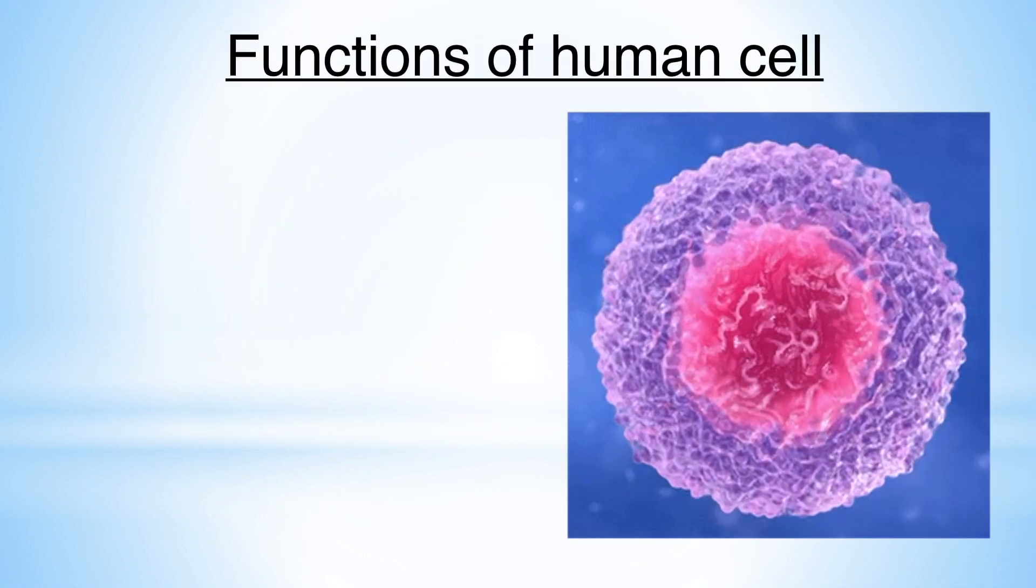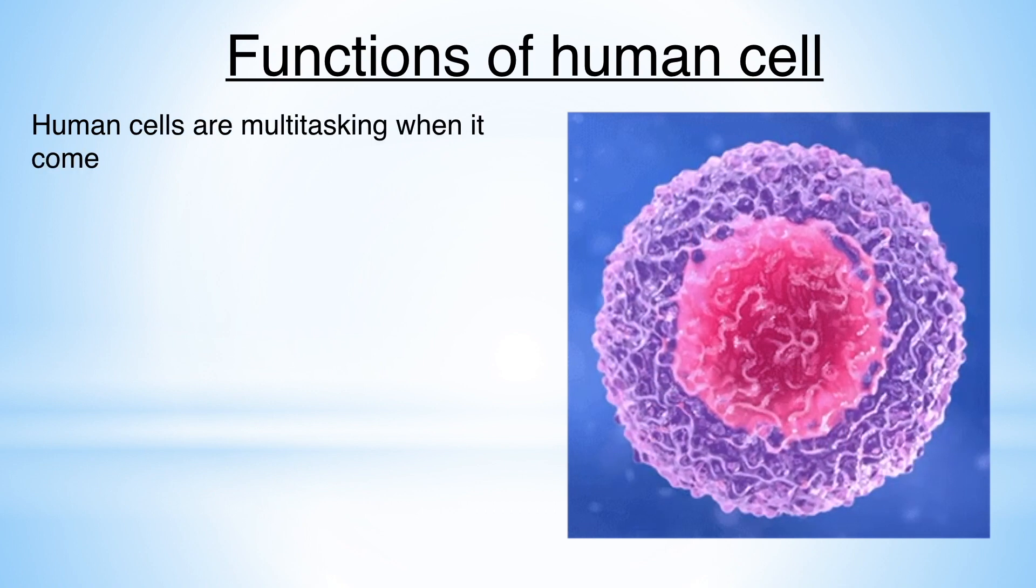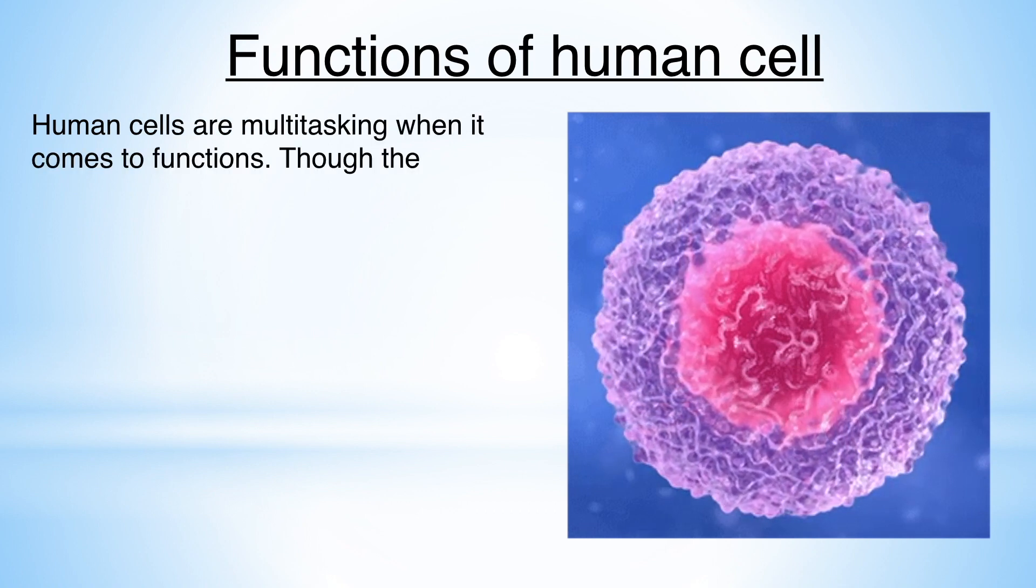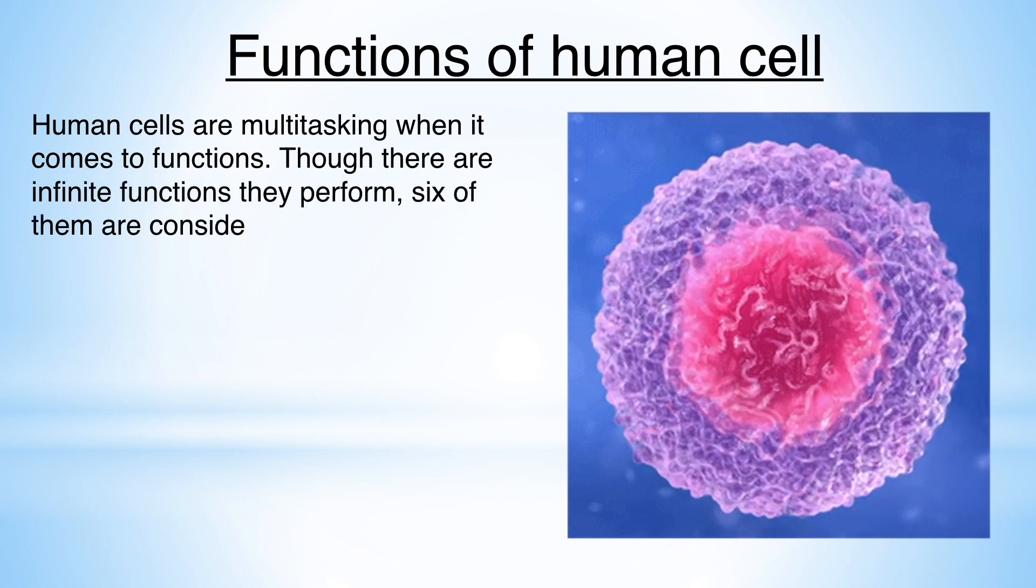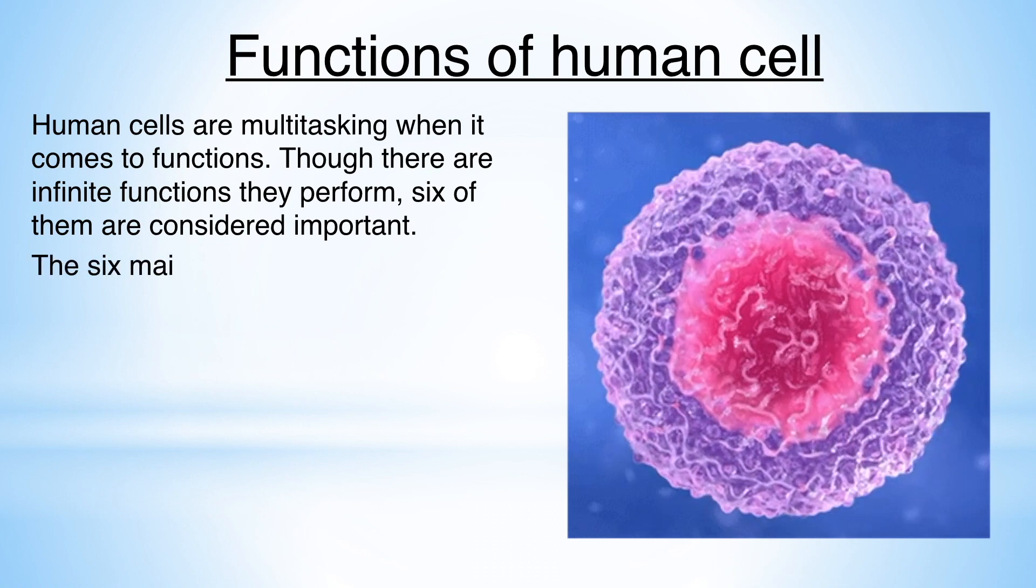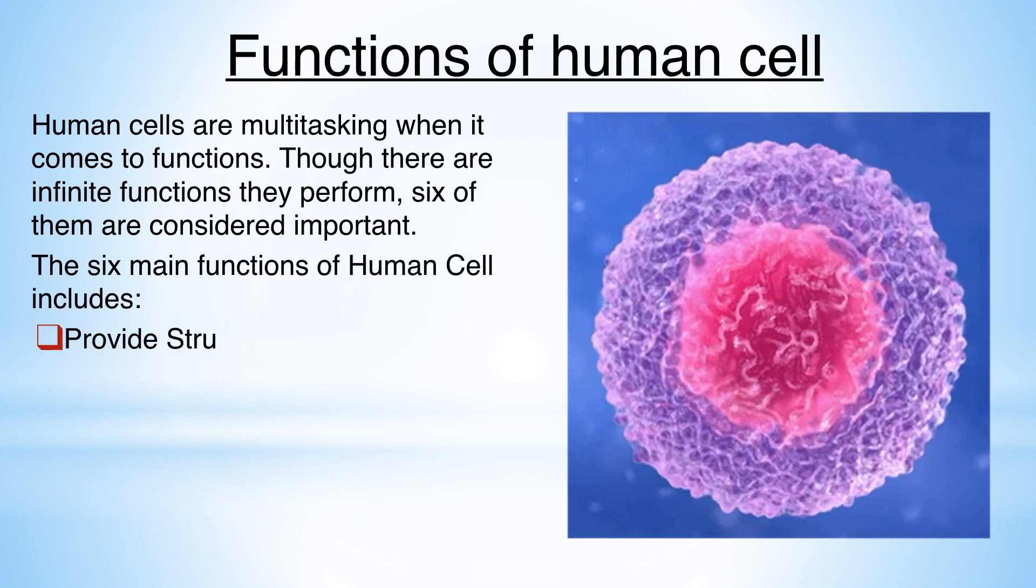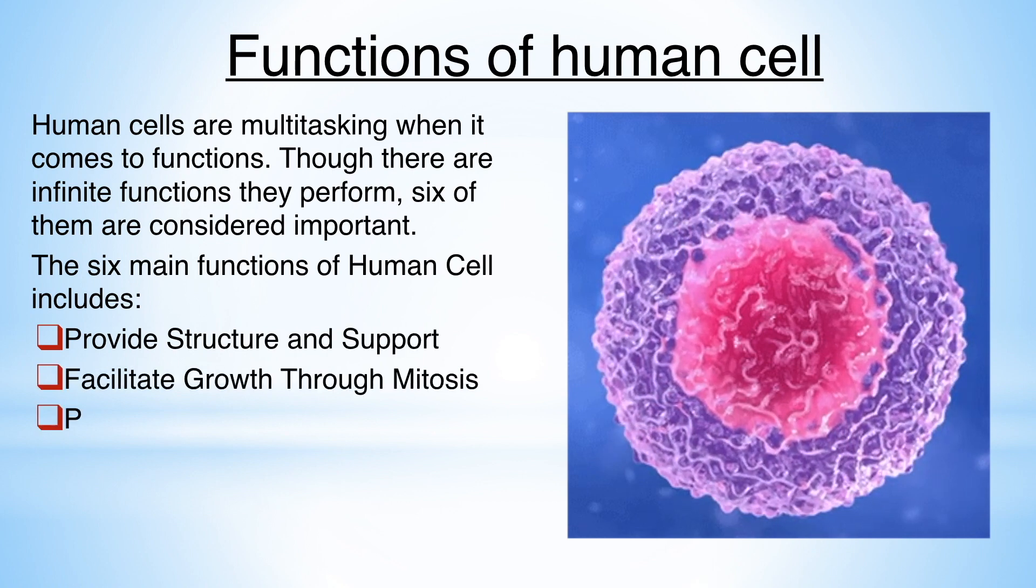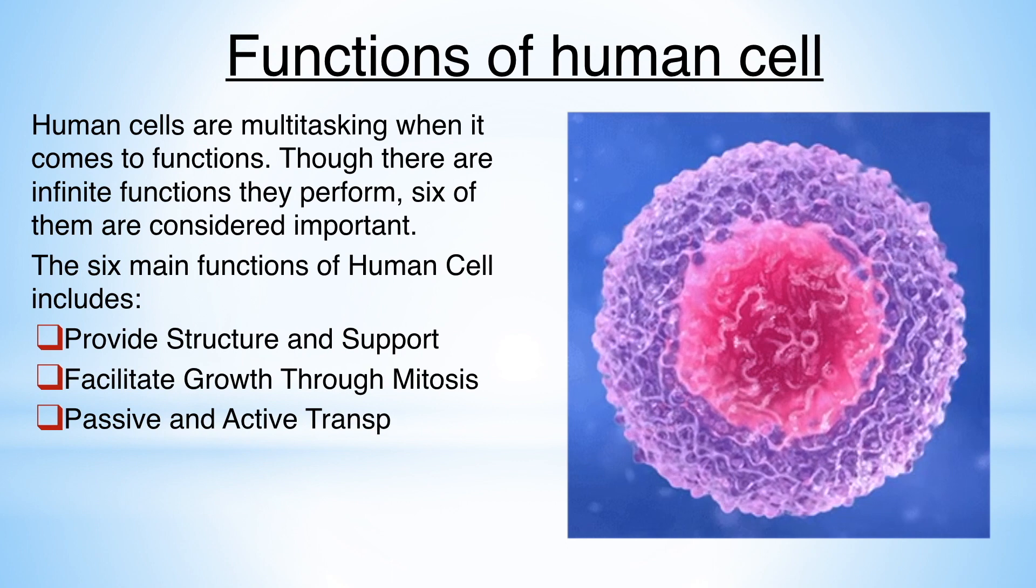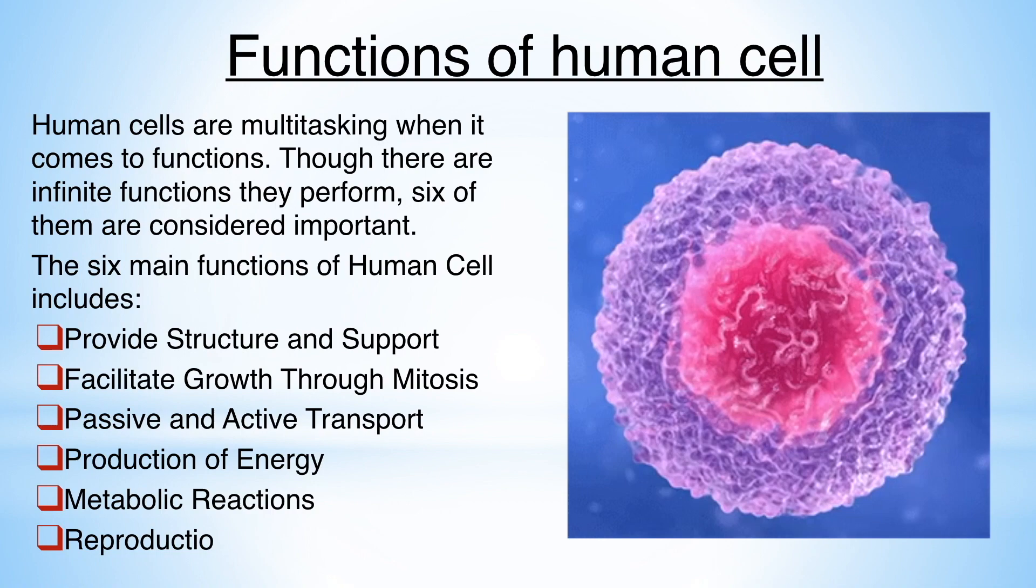Functions of human cell. Human cells are multitasking when it comes to functions. Though there are infinite functions they perform, six of them are considered important. The six main functions of human cell include: provide structure and support, facilitate growth through mitosis, passive and active transport, production of energy, metabolic reactions, and reproduction.